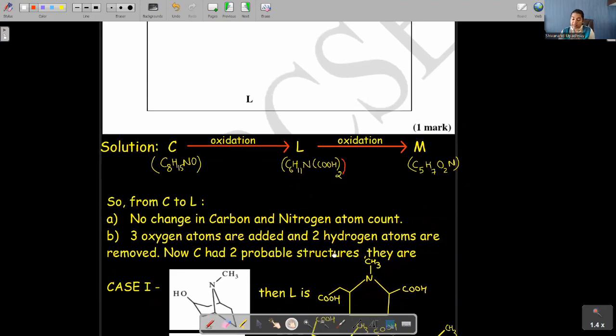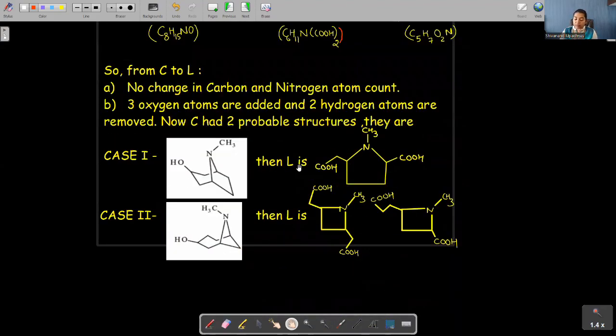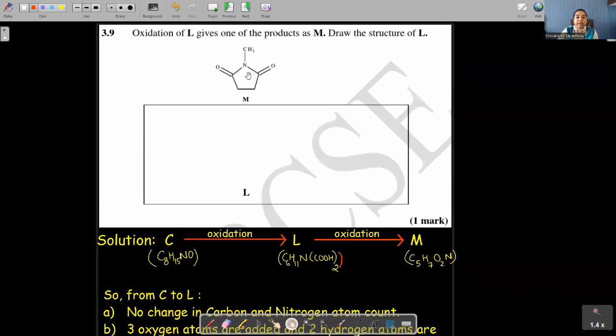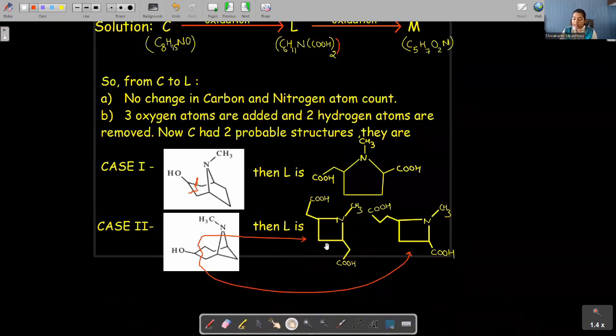Now C has two probable structures. We have already seen in the last question these two. If I take case one, then by the way they have taken oxidation, it seems that this bond is broken and rest remains same. So if this bond is broken, I will have COOH, CH2COOH. Now the structure is symmetrical. So whether you break this bond or you break this bond, both will give L to be the structure I drew. Now case two, when this particular structure is taken, then L is, by the same logic, either it will be broken from this side or that side. If I break it from this side, then I will get this structure. If you break it from this side, then you will get this structure. Now both these structures are four-membered rings, whereas the question directly indicates that the ring formed is a heterocyclic and is a five-membered ring. So if it is a five-membered ring, definitely the answer cannot be case two. And we have to continue with case one to be the answer.